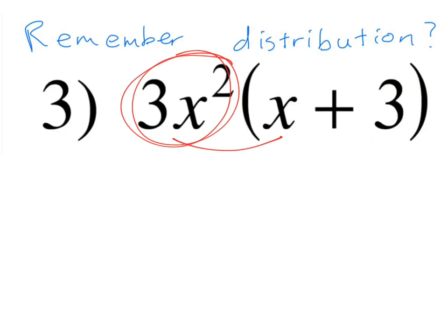So the first part, 3x squared times x, is going to give you 3x squared times x. Well, these have the same base, and so you add those exponents. And that will give you 3x cubed.